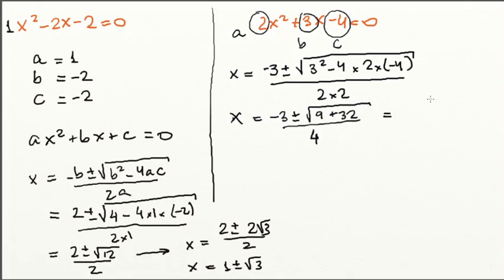So, if we try and solve this, we will get negative 3 plus or minus root of 41 over 4.